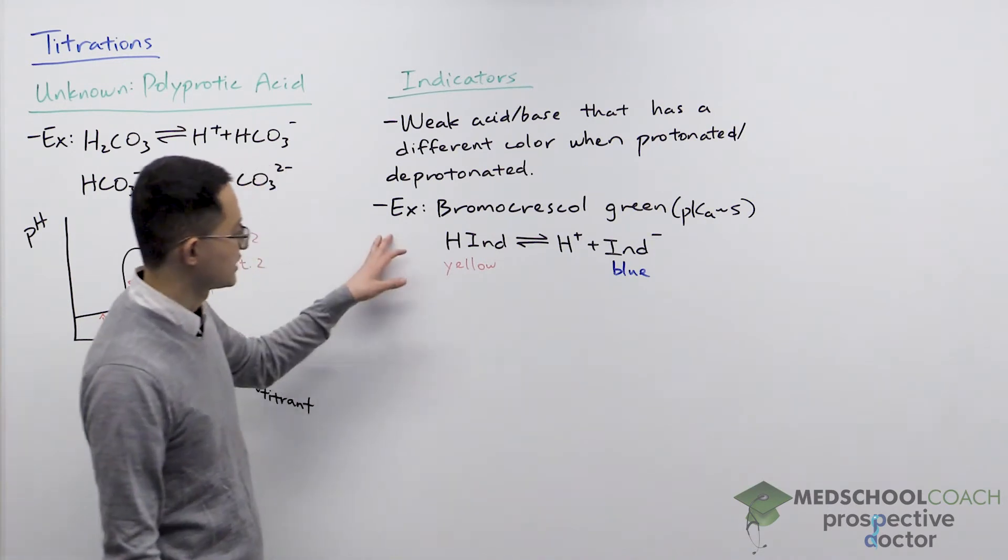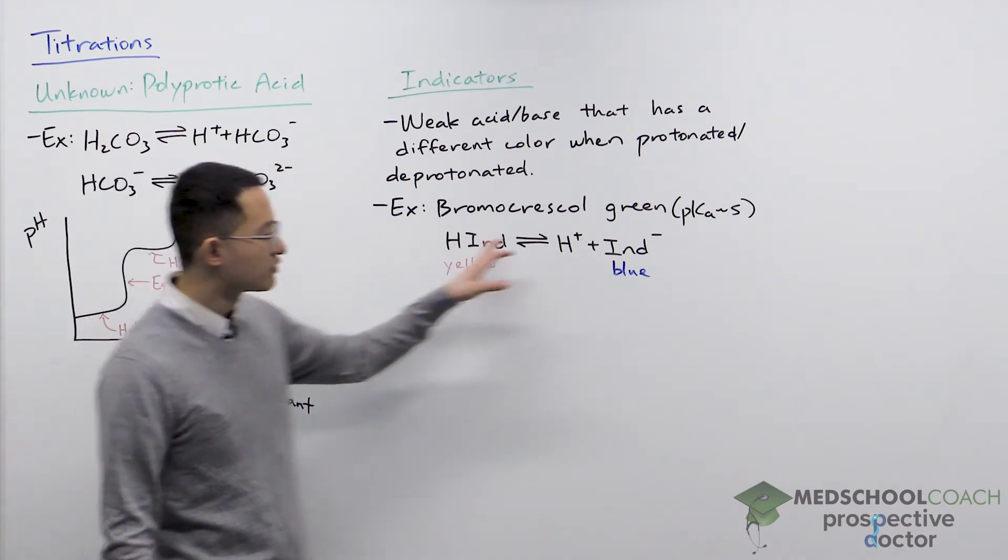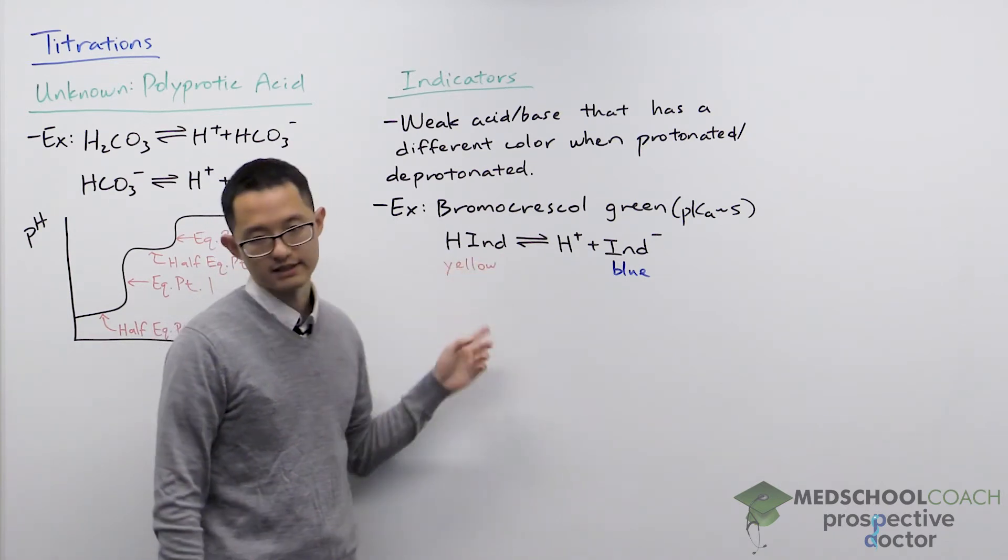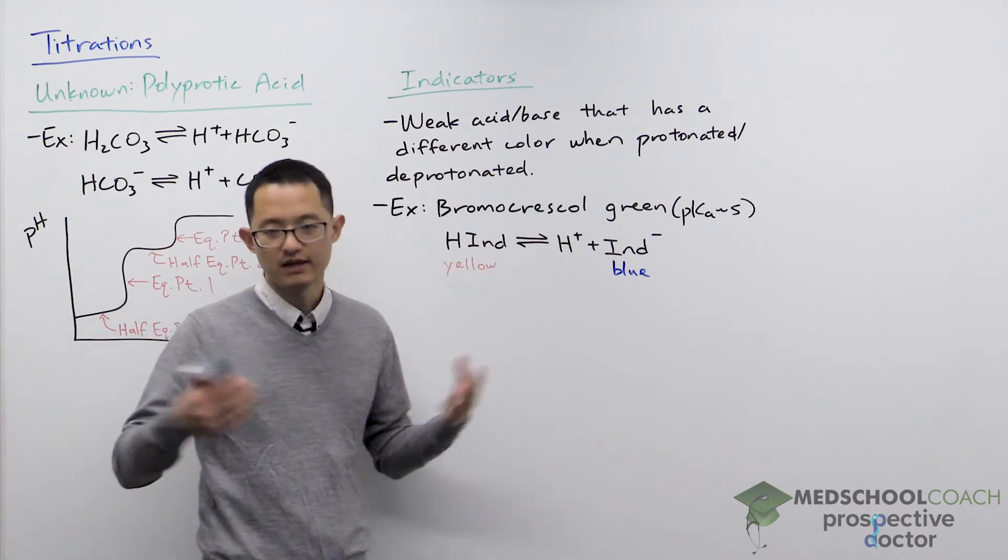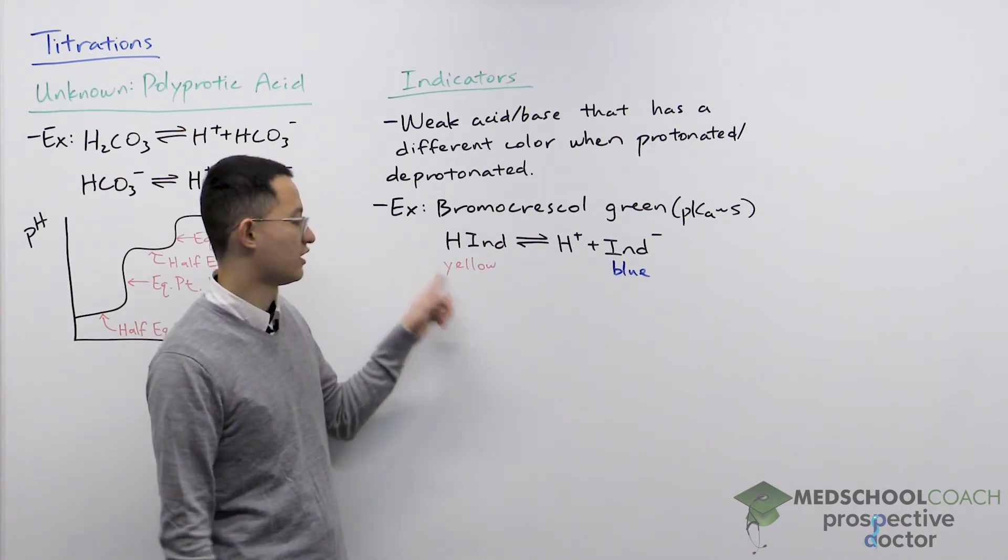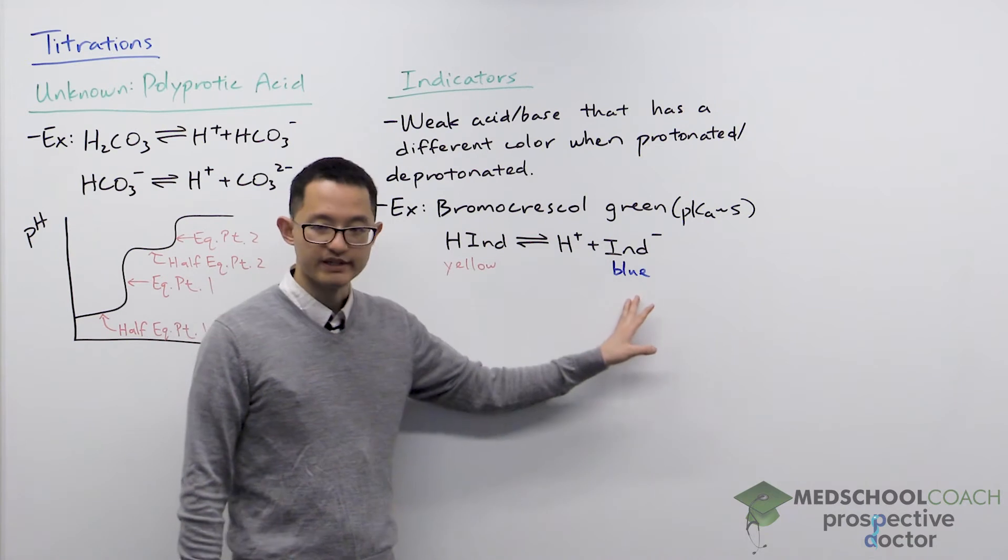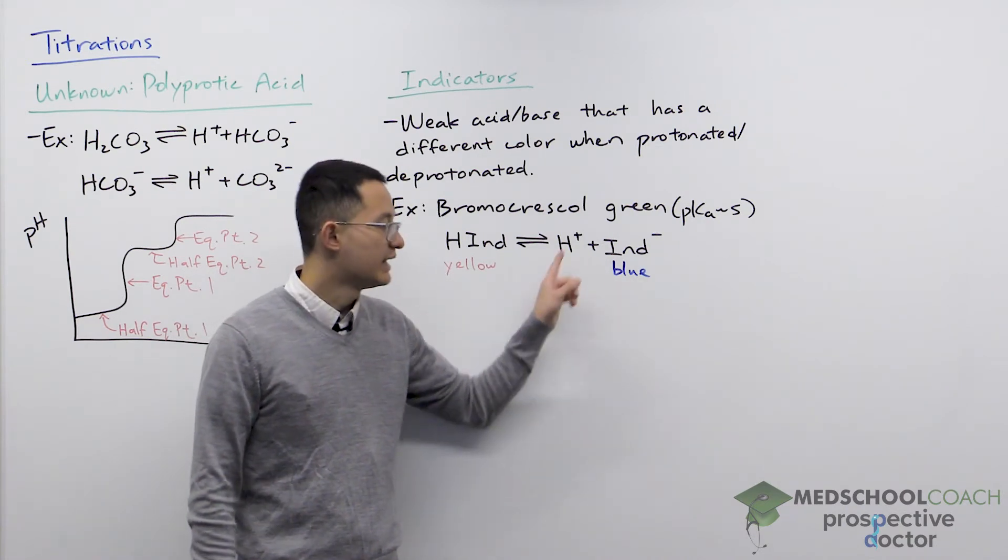As an example, I have here bromocresol green. Here when it's in its protonated state, which I've denoted as HIND, just some indicator molecule with a hydrogen ion on it, it's yellow. When it's deprotonated as IND minus, it is blue.